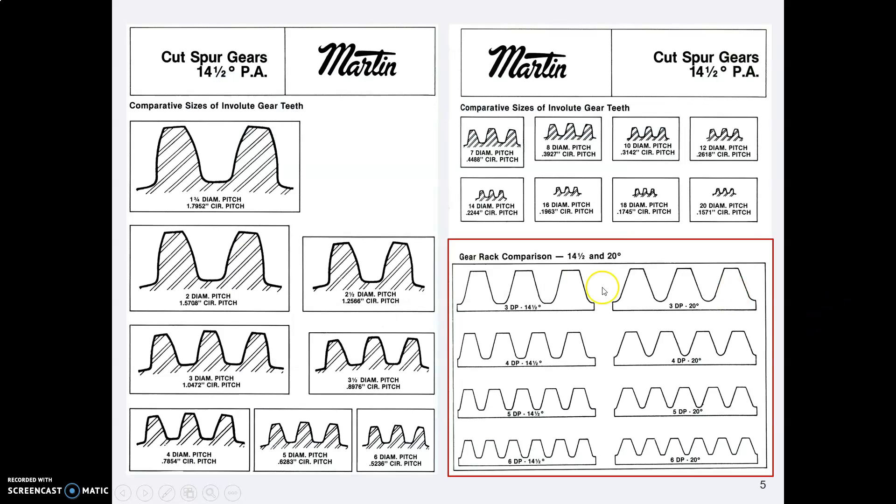Here's an example out of the same gear catalog we looked at earlier last week. Here are some rack teeth. Sometimes you see flat roots at the bottom of the teeth, and sometimes you see them radiused.